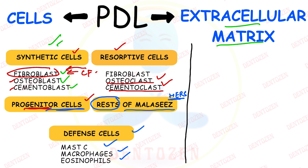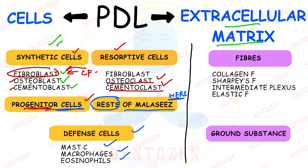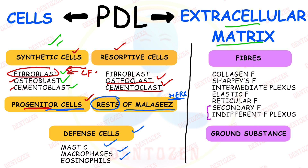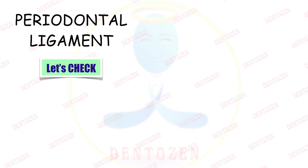Extracellular matrix is made up of fibers and ground substance. Fibers in the PDL include collagen fibers, Sharpey's fibers, intermediate plexus, elastic fibers, reticular fibers, oxytalan fibers, and indifferent fiber plexus — to be discussed in the third video. Ground substance consists of proteoglycans, glycoproteins, and glycosaminoglycans.